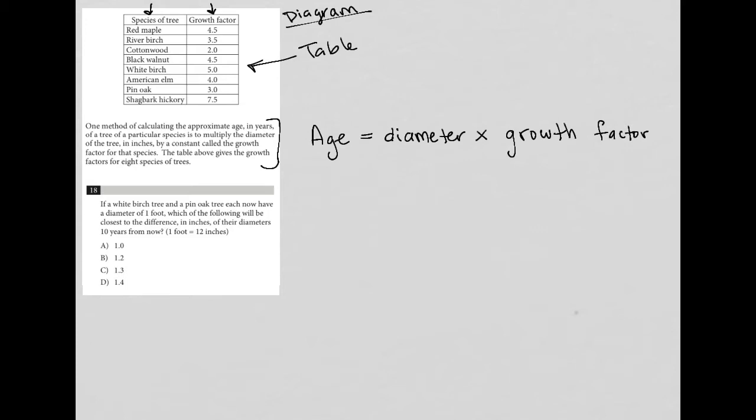So question 18 says, if a white birch tree—so I'm going to immediately just go here and box this. So my attention is where it needs to be. If a white birch tree and a pin oak tree each now have a diameter of one foot.